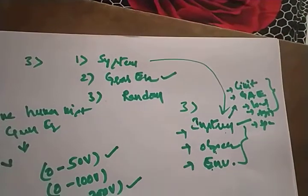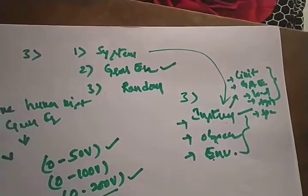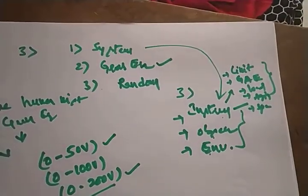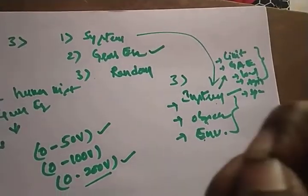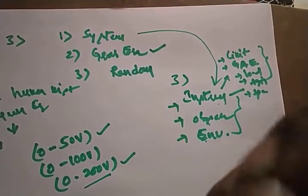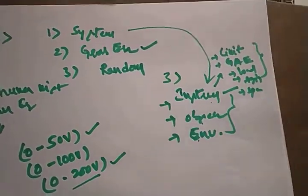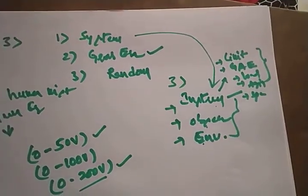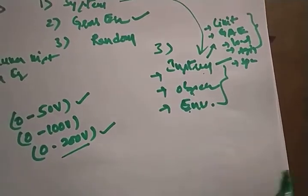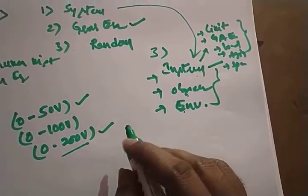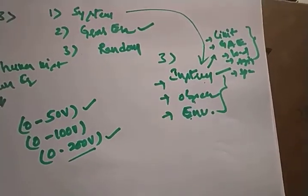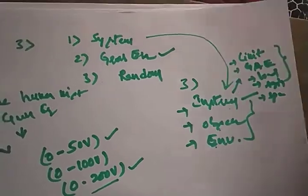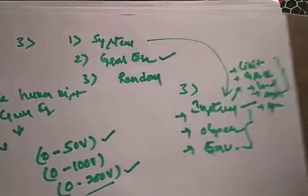Guaranteed accuracy means accuracy can be specified as a percentage of error or percentage of accuracy with respect to full scale. Some students asked me to explain guaranteed accuracy again, so I'm covering it in this class.